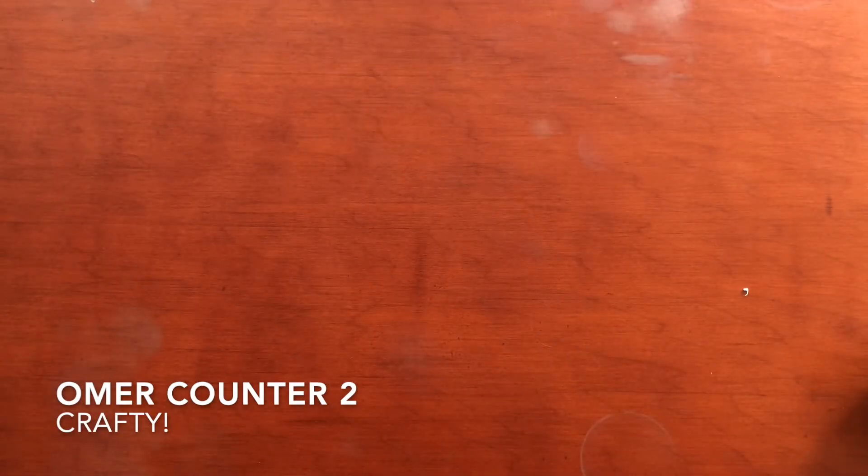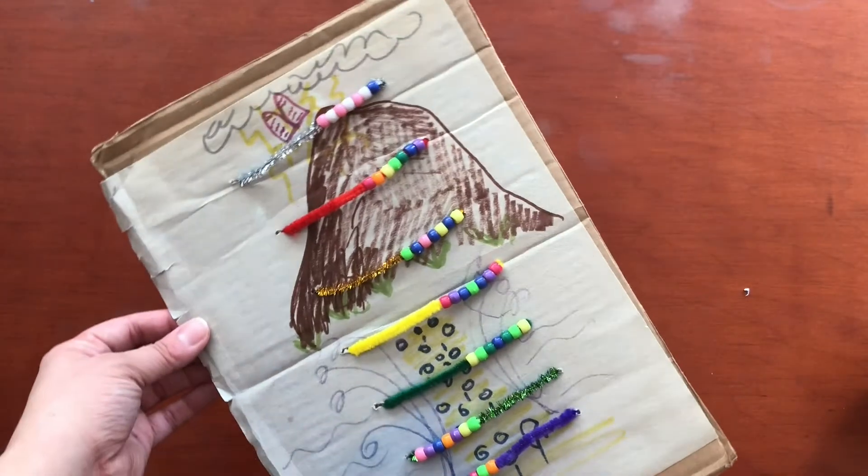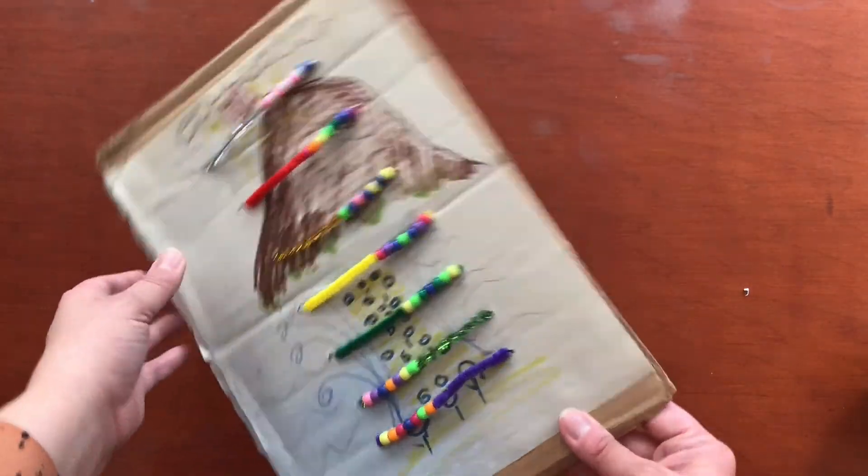Yeah, there's other ways you can do it too. If you're not a fan of having things that disappear very quickly, like snacks, you can also make a more permanent Omer counter. This is what I made a few years ago, actually, with Machina Shabbat.